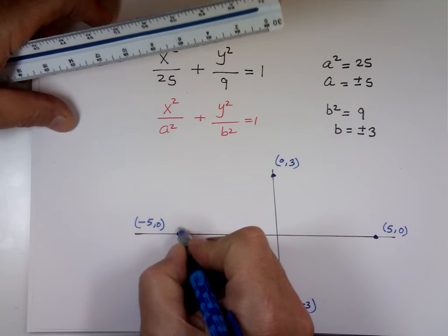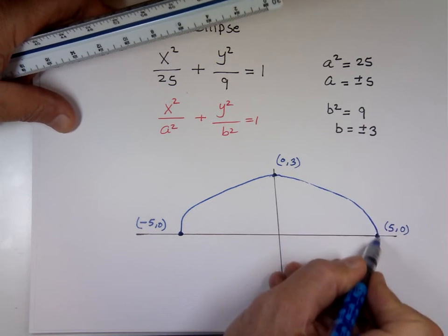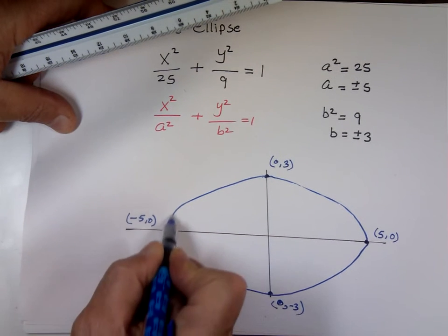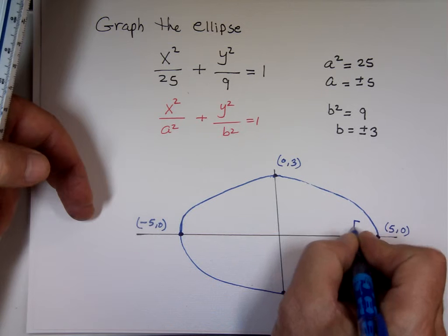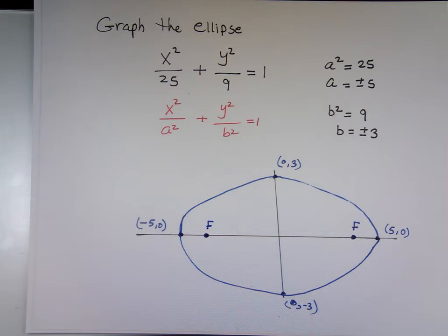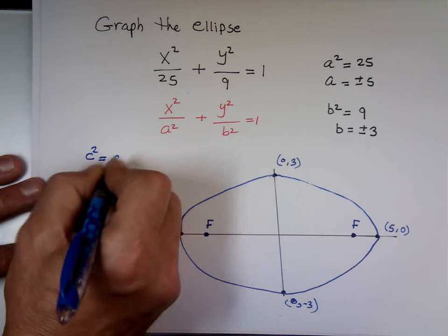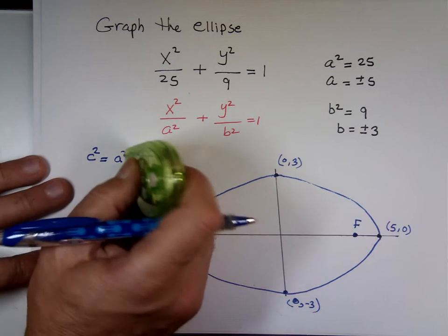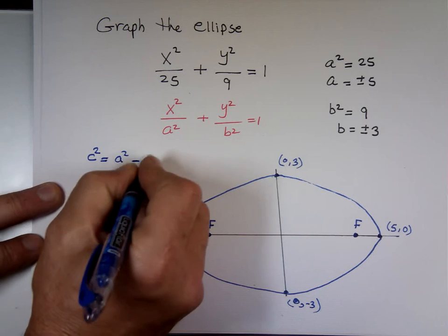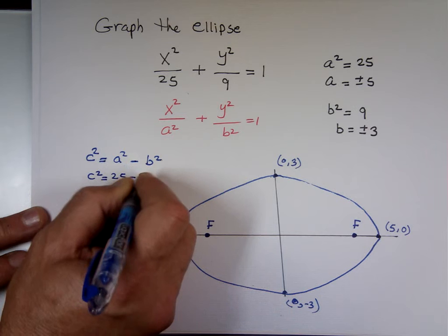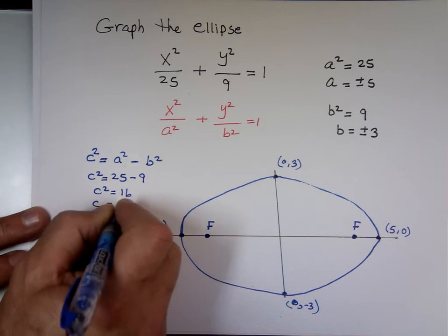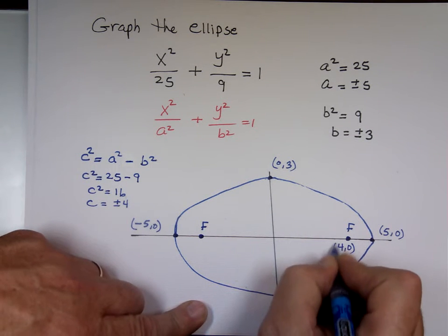Now I need the focal point — there are two of them. To calculate C: C squared equals A squared minus B squared, which is 25 minus 9, so C squared equals 16, and C equals plus or minus 4. So the focal points are at (4, 0) and (−4, 0).